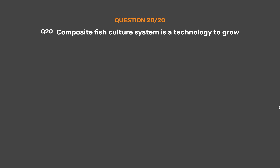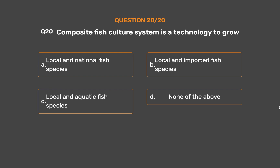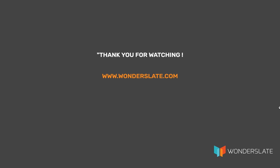Question No. 20. Composite fish culture system is a technology to grow — Option A: Local and national fish species. Option B: Local and imported fish species. Option C: Local and aquatic fish species. Option D: None of the above. The correct answer is Option A: Local and national fish species. The composite fish culture system is a technology to grow both local and imported fish species in water in the paddy field.